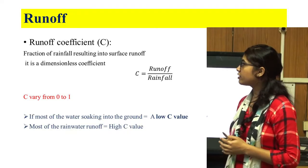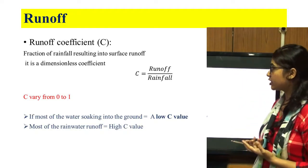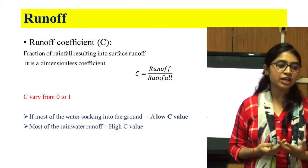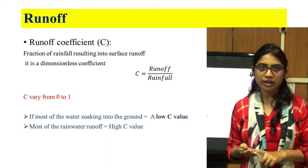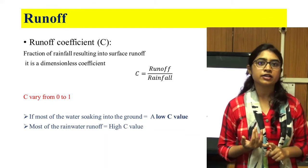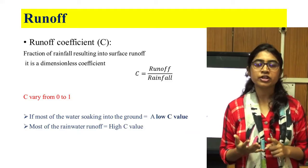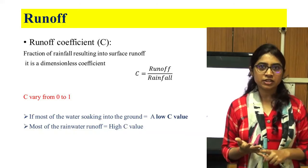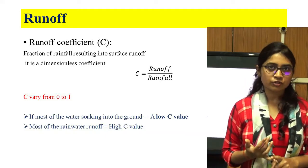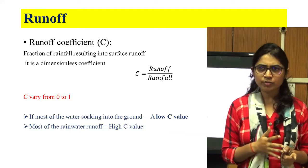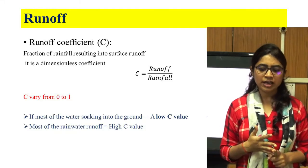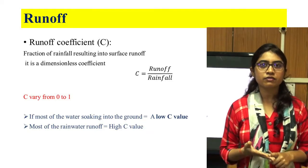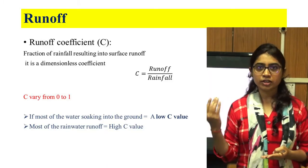The runoff coefficient C is the fraction of rainfall resulting in surface runoff. It is a dimensionless number with values varying from 0 to 1. If the soil is very sandy, infiltration rate is very high and runoff is very low, so the value of C will be near 0. If the soil is clay type, infiltration is very slow and runoff is very high, so the value will be near 1.